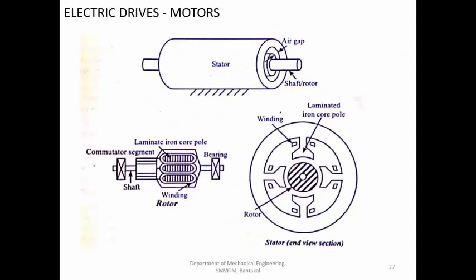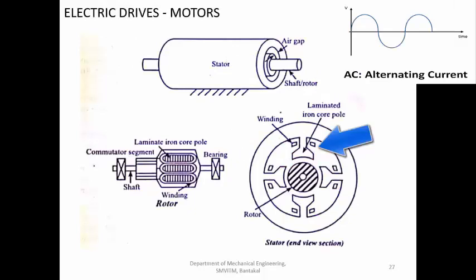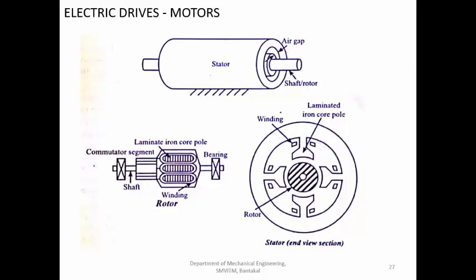In the DC motor, we have a commutator and coils. The commutator continuously changes the direction of current flow through the coils. In AC, we supply current to the stator, and AC current can do induction — whatever flux is generated in the stator coil, a reverse flux is created in the rotor conductors, and these two interact to produce rotation. But in DC, this does not happen. As the rotor rotates, we continuously change the direction of current by artificial means using the commutator, which is divided into two parts connected to different coils, ensuring the correct magnetic polarity so rotation always occurs in the same direction.